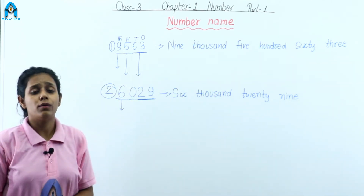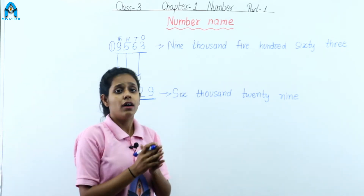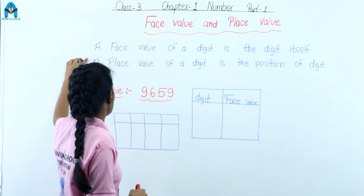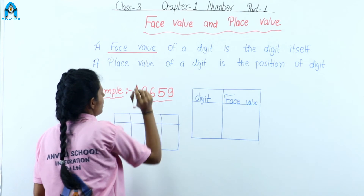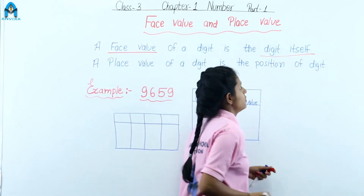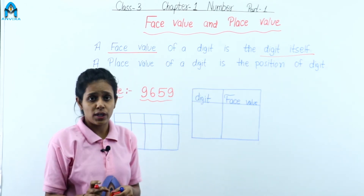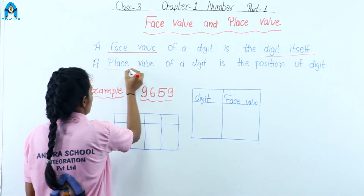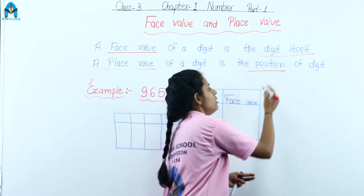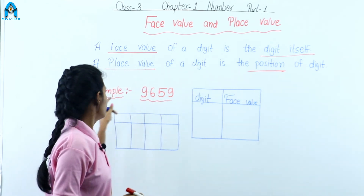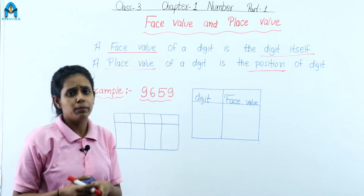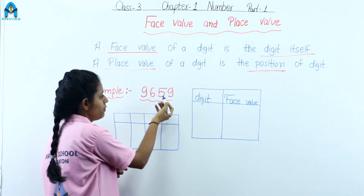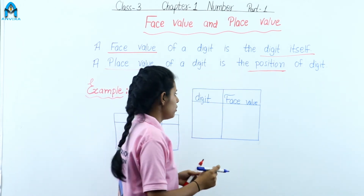We learned how to write a four-digit number name and how to read a four-digit number. Now our next topic is face value and place value. What is face value? The face value of a digit is the digit itself. Now what is place value? The place value of a digit depends on its position. We have an example — the number is 9659.